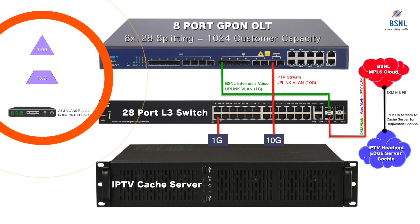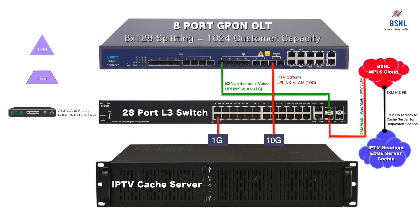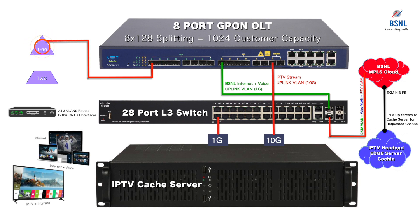On the downlink side of the OLT, the main OFC is connected to the downlink PON ports. It will then pass through joints, couplers, splitters, and spur route OFC before reaching the ONT at the customer premise, which will then be connected to various equipment like Wi-Fi router, IP phone, TV, and mobile. At the ONT, all three VLANs will be available as three virtual interfaces, which will be routed to the corresponding IPs by virtue of the routing functionality of the ONT.